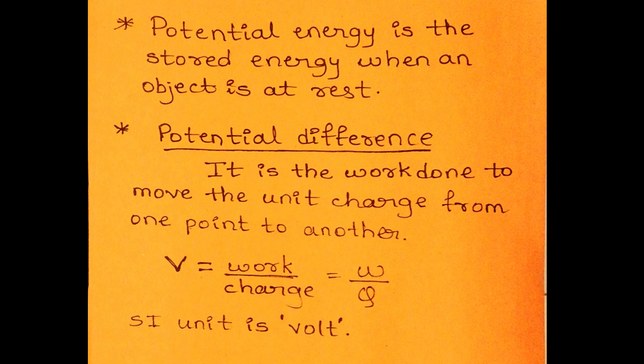Can you tell me what is potential difference? Potential difference is the difference of electric pressure between two points. It can also be defined as the work done to move a unit charge from one point to another. V equal to W upon Q — it is nothing but work done upon charge. The SI unit of potential difference is Volt.